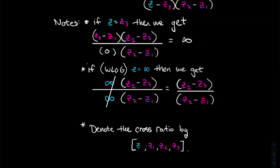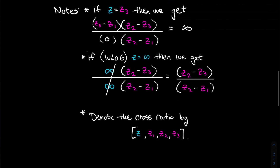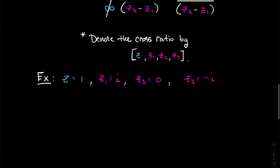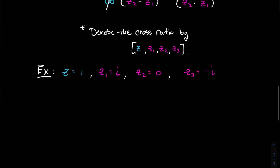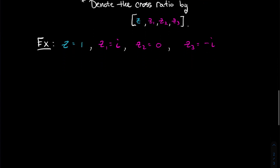The notation for the cross ratio we'll use is square brackets: [z, z1, z2, z3]. Let's do a quick example to make sure the cross ratio isn't scary — let's pick concrete complex numbers and compute.